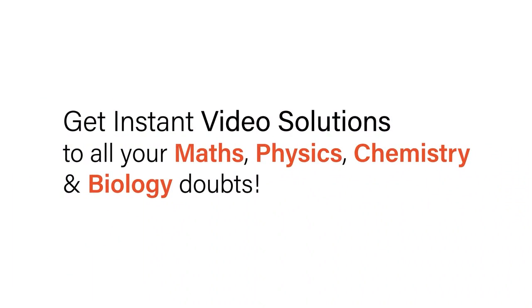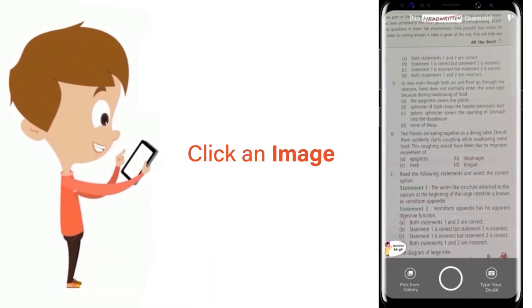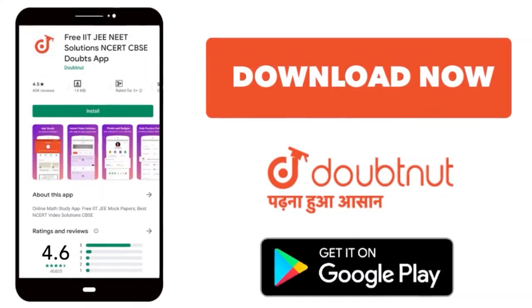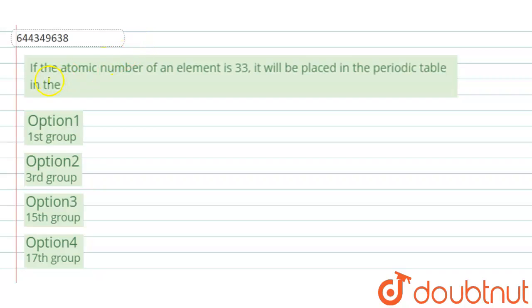With Doubtnet, get instant video solutions to all your maths, physics, chemistry, and biology doubts. Just click the image of the question, crop it, and get an instant video solution. The question is: if the atomic number of an element is 33, it will be placed in the periodic table in the first group, third group,